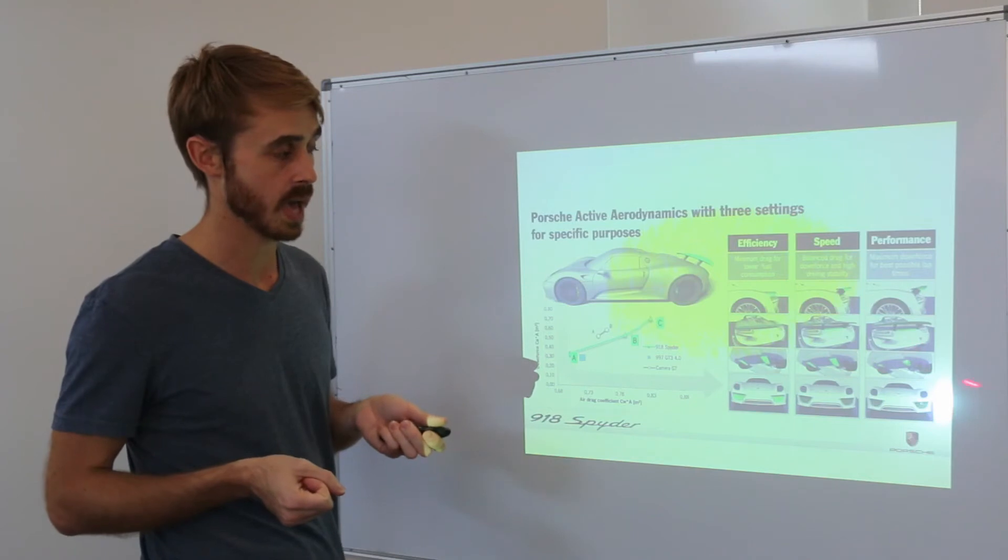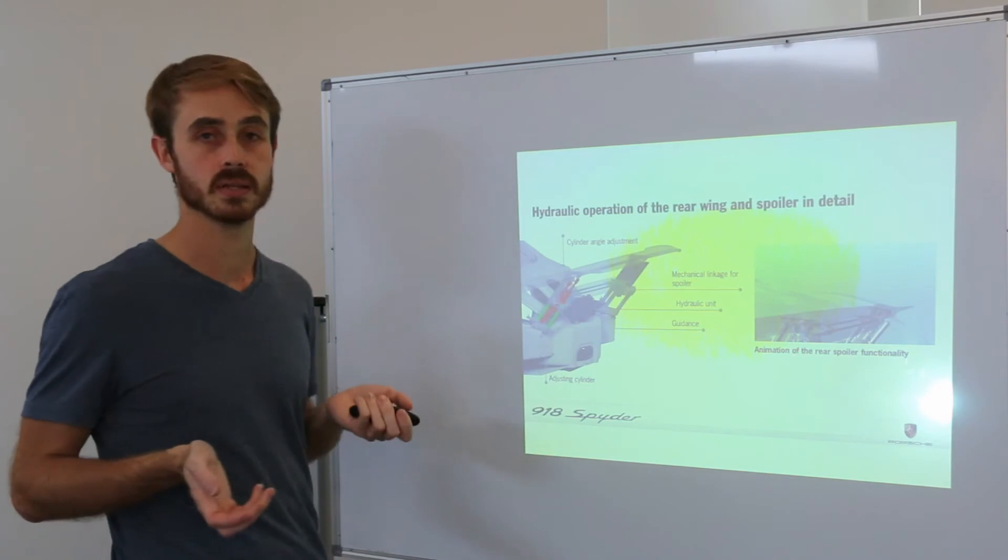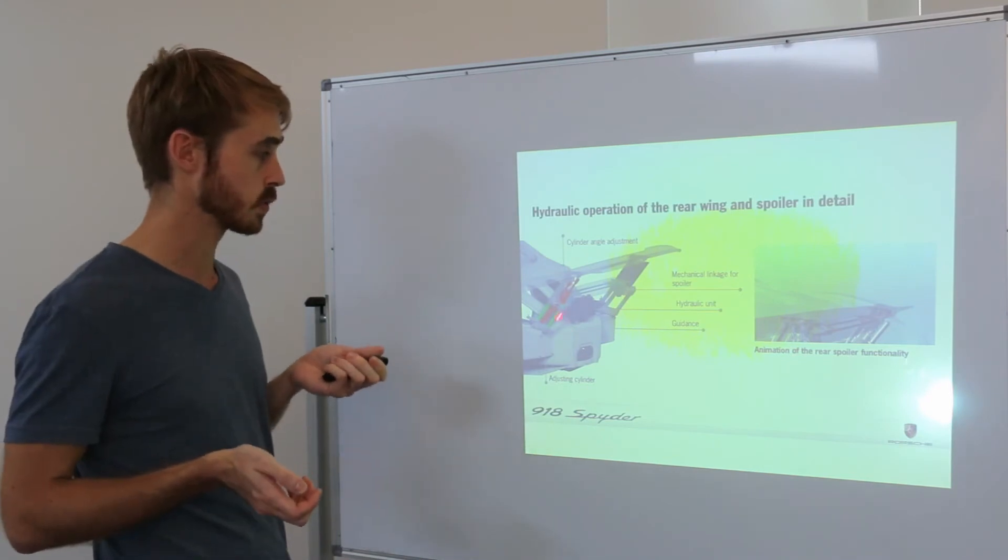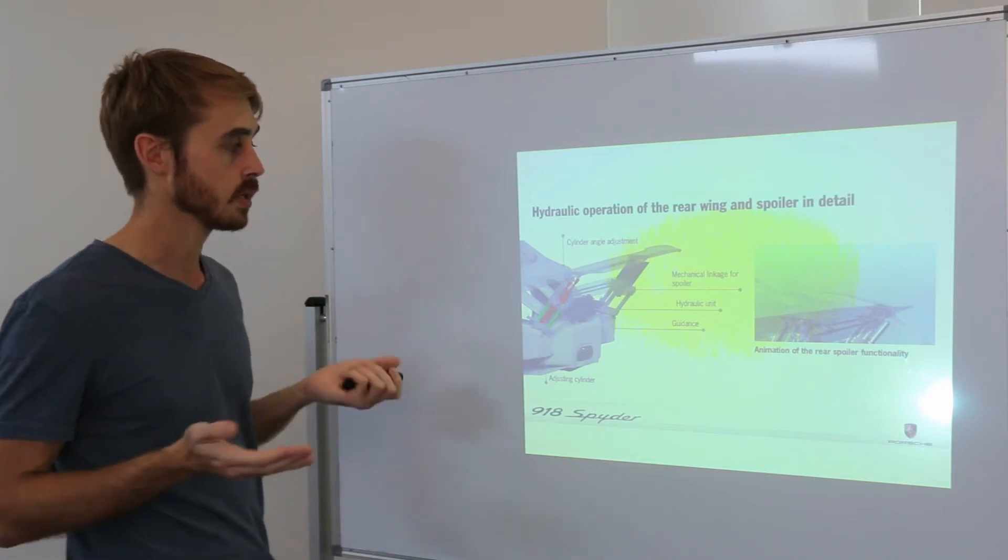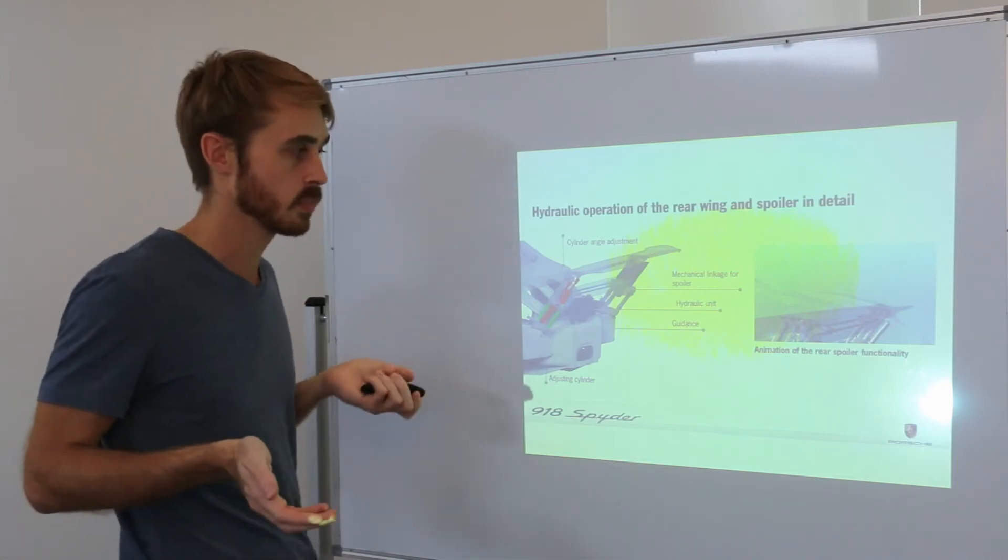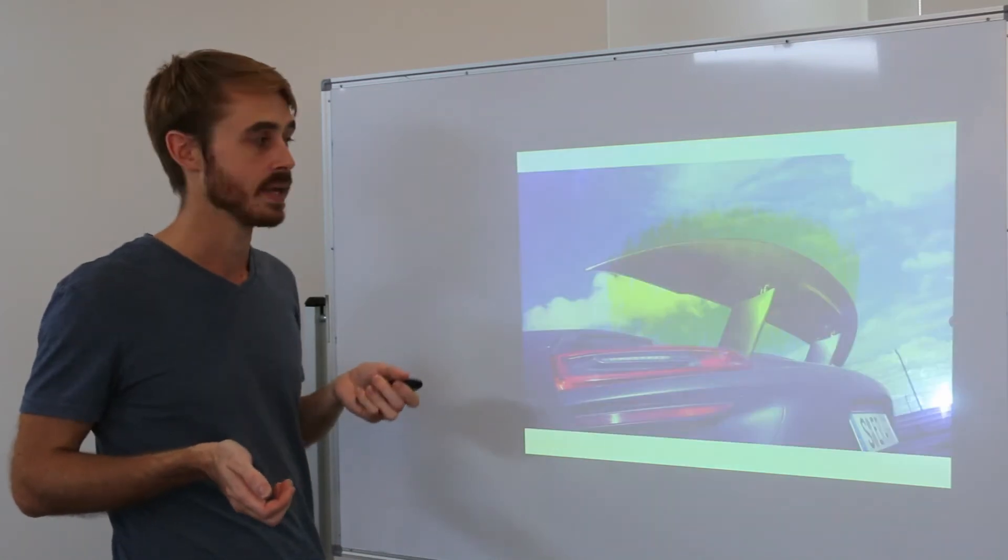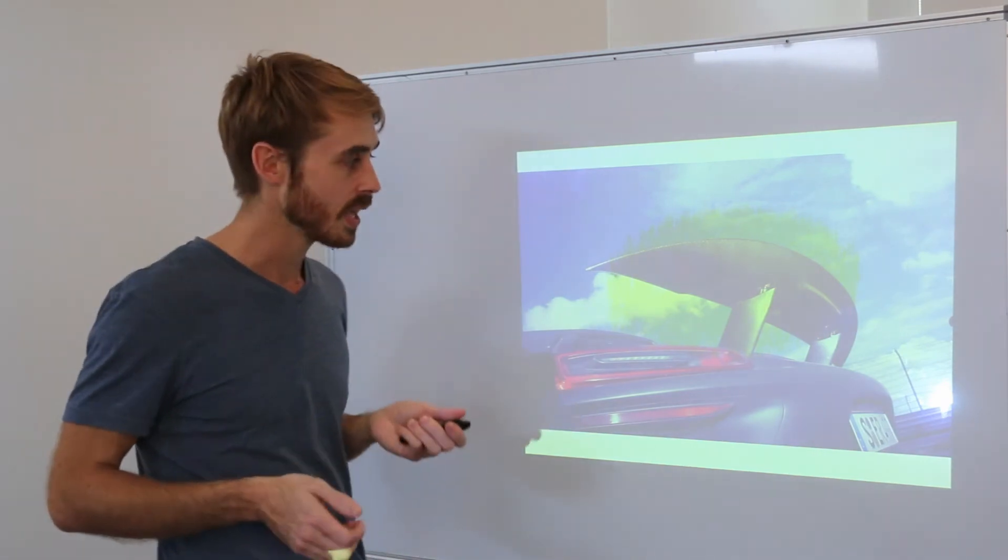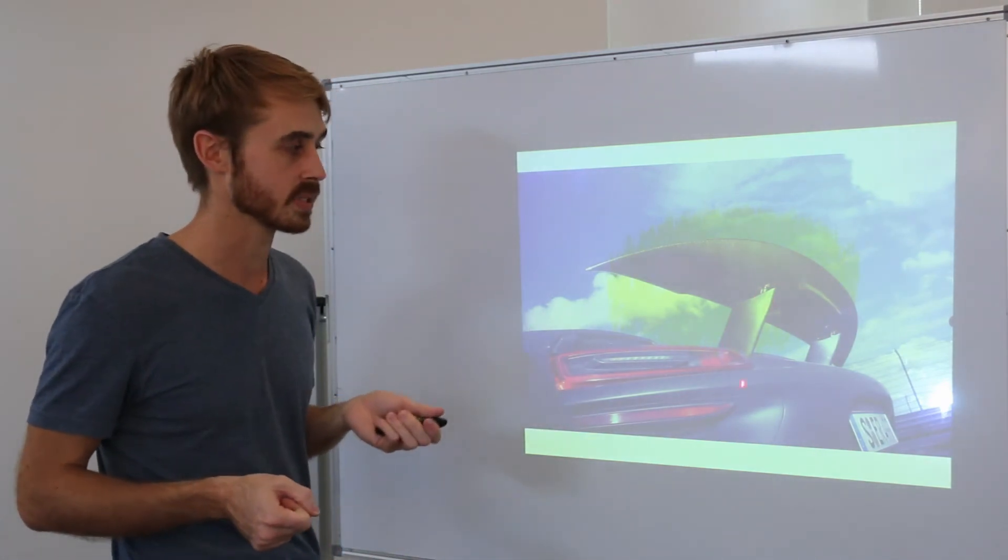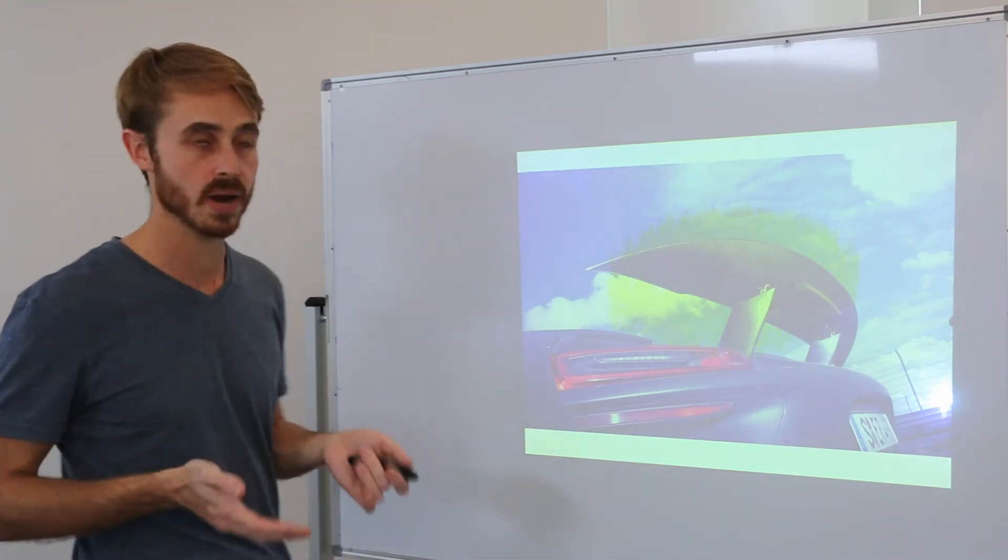Looking at that rear wing in depth now, we can see that it's a pretty similar system to the P1. You've got your two main actuation rods and then you've got an angle adjustment in the center. The interesting thing is that my gripe about the P1's rear wing was that all its actuators were exposed. If we look at the 918's wing, they've got exactly the same actuation system but the actuators are hidden, so that's a better application.